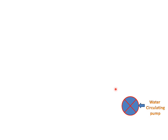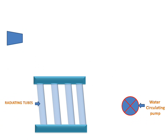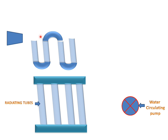We have a water circulating pump. We have a radiating tube section and a turbine. We have a superheater. And there we have a compressor for supplying compressed air to the radiating tube section.